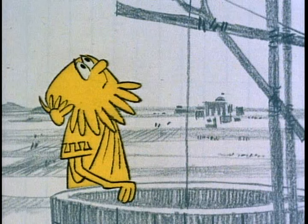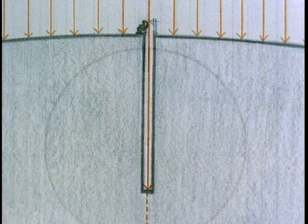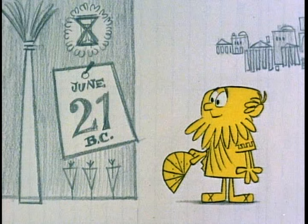While visiting the city of Syene one midsummer's day, Eratosthenes noticed that the reflection of the sun could be seen in the bottom of a deep well. The sun was overhead and the rays pointed to the center of the earth. He remembered this.